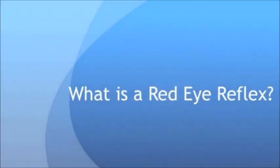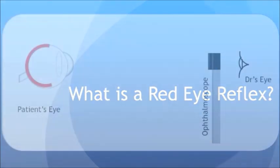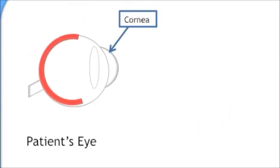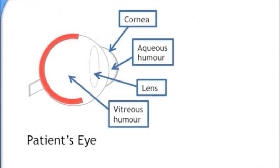So what is the red eye reflex? The red eye reflex uses transmission of light from an ophthalmoscope through all the normally transparent parts of the subject's eye. This includes the cornea, aqueous humor, lens and vitreous humor.